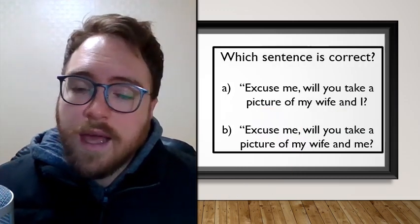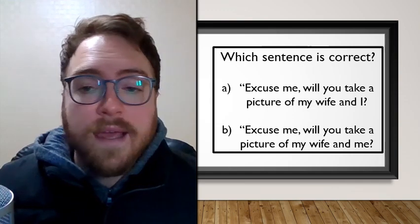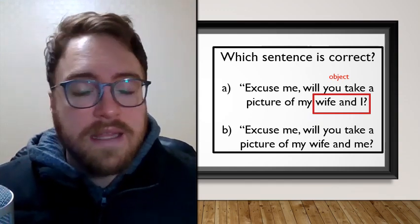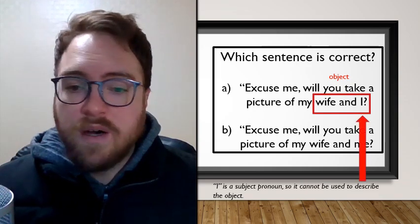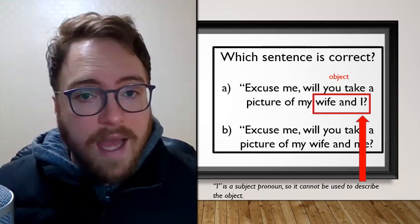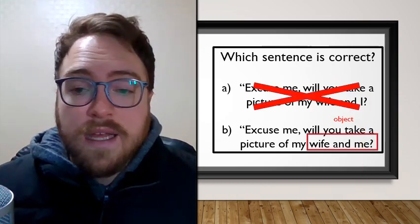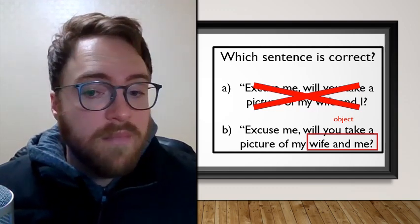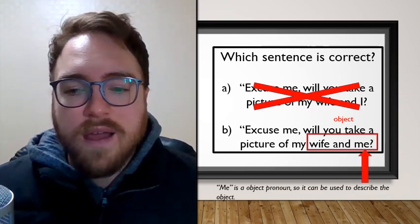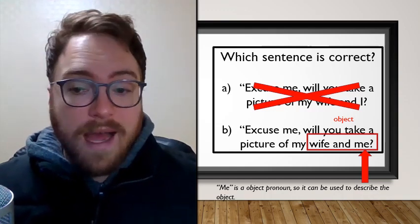Now let's look at the other example: 'Excuse me, will you take a picture of my wife and I?' Here, 'my wife and I' is the object. Since 'I' is a subject pronoun, it cannot be used to describe the object, so A is not correct. In answer B, 'my wife and me' is the object, and 'me' is an object pronoun, so it can correctly describe the object.